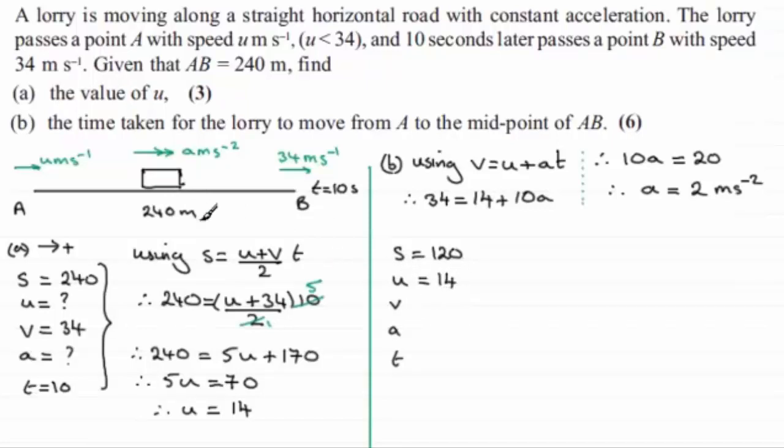V, we don't know any more, because we don't know the final velocity when it's halfway across. So we'll leave that out. A, the acceleration is constant wherever we are across AB. So we've just worked that out as being 2. And the time, well, that's what we want to find.